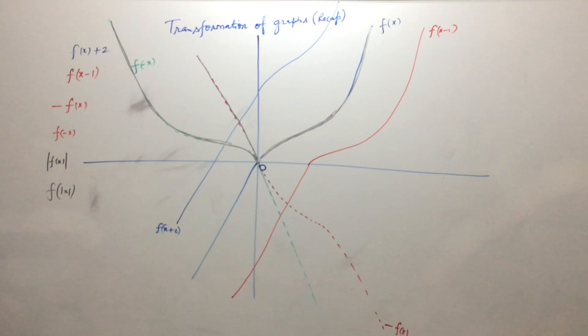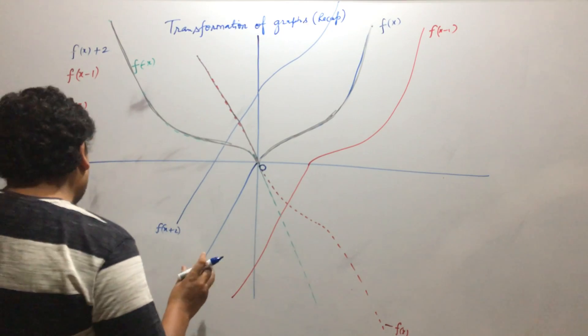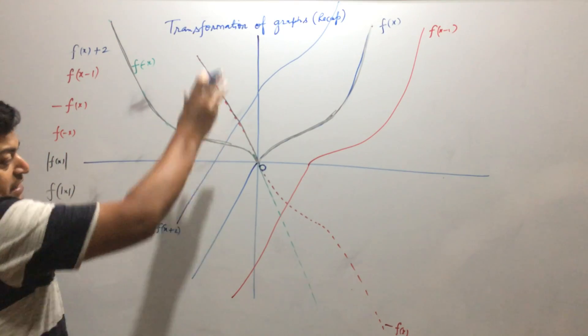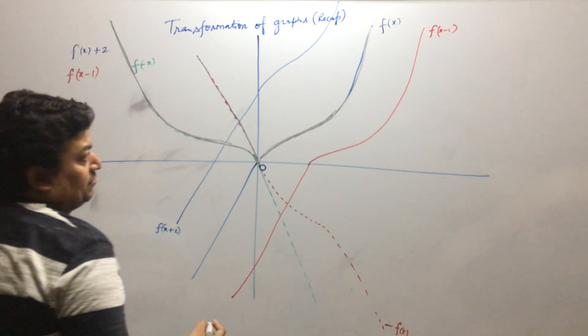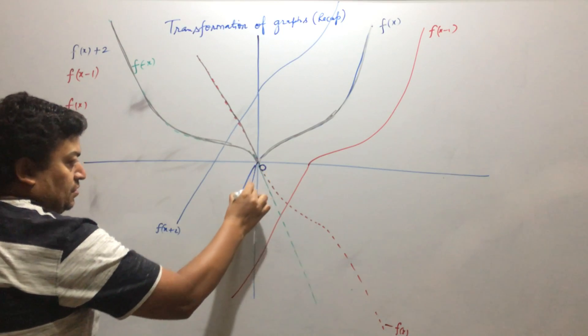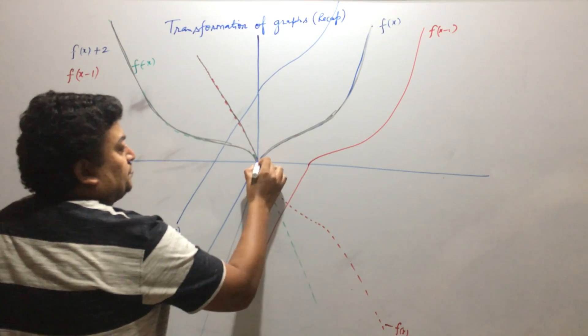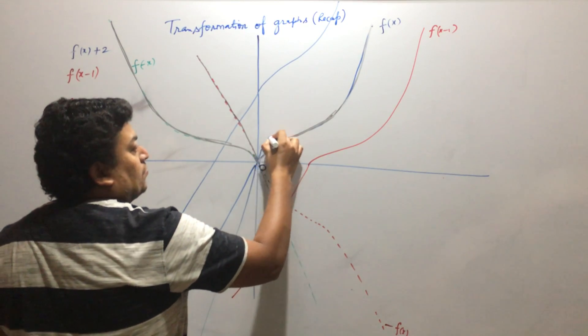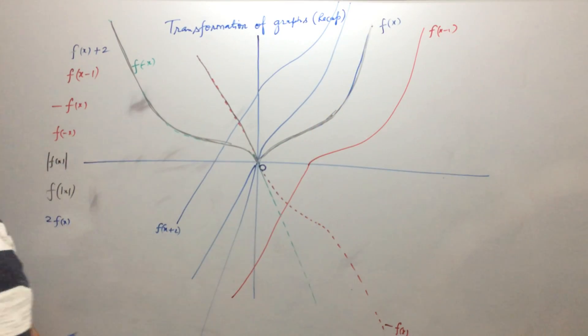Now suppose you have to draw the graph of 2f of x. So graph of 2f of x will be obtained by stretching the graph along y axis. That will be something like this.